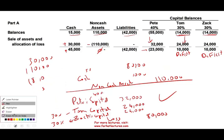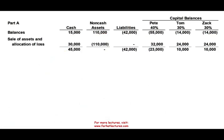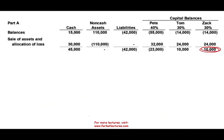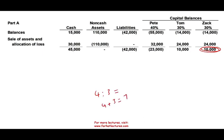The next step: Zach has a deficit balance, and from the prior information, we don't expect anything from Zach because his personal assets can barely cover his personal liabilities. Therefore, we're going to take Zach's deficit balance of $10,000 and allocate it to Tom and Pete. Tom will eventually contribute cash to cover his balance, and Pete already has a credit balance. They're going to absorb Zach's deficit at the ratio of 4 to 3 — 4 plus 3 equals 7 — so 4 sevenths goes to Pete and 3 sevenths goes to Tom.